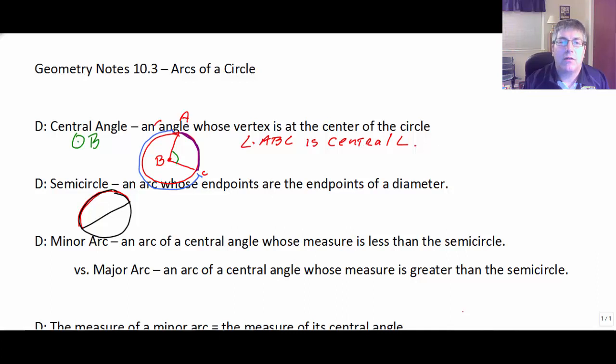Definition of a semicircle. A semicircle is an arc whose endpoints are the endpoints of a diameter. So if this were circle B again, our chord XY would pass through the center of the circle. And the red arc here would be a semicircle.